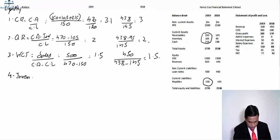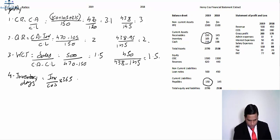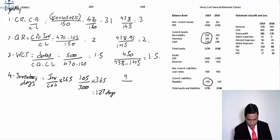Computing inventory days: inventory of 105 over cost of sales of 300 multiplied by 365 gives 127 days for 2019. For 2018, inventory of 95 over cost of sales of 280 multiplied by 365 gives 124 days.